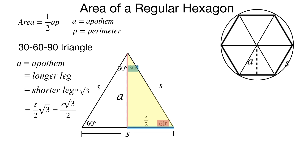Before continuing, if this had not been a hexagon — if it had been any other regular polygon and we didn't get this nice 30-60-90 — you would probably have to use trigonometry. It's a little more complicated finding the area of any other regular polygon, but it can be done. It's easier with the hexagon because the 30-60-90 rules let us find the apothem length without trigonometry.